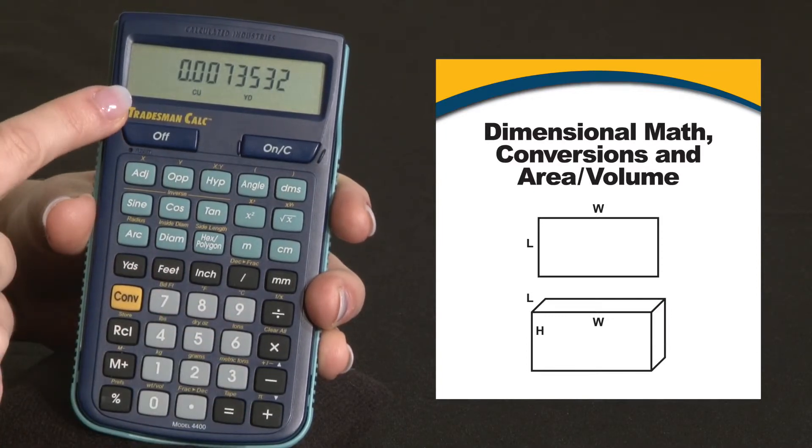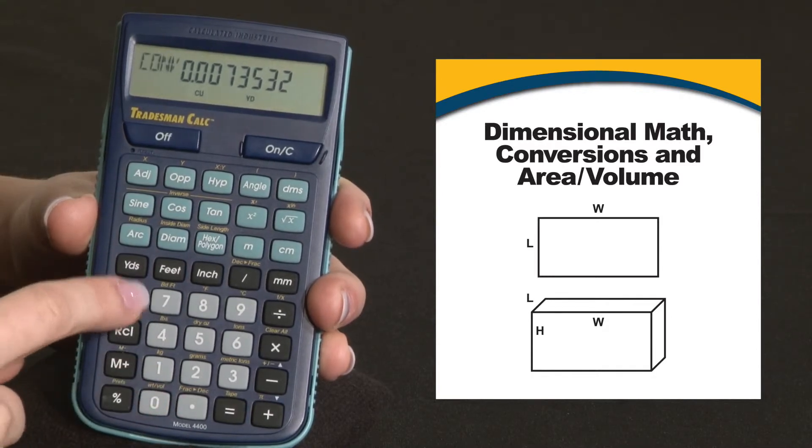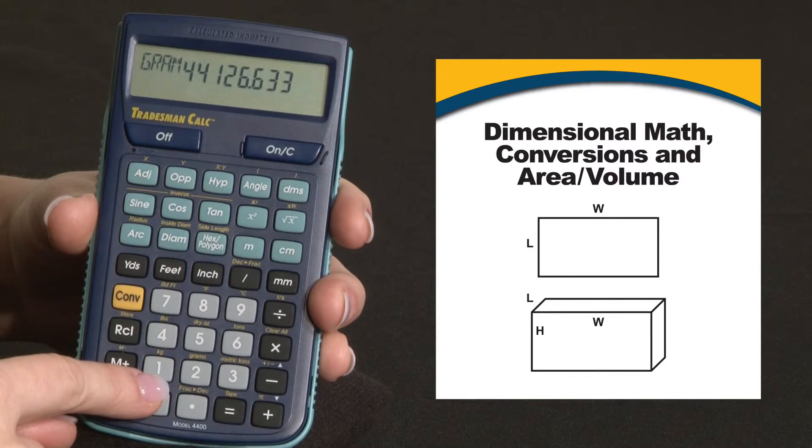You can convert this volume to U.S. imperial or metric weights like grams, kilograms, ounces, tons, and more.